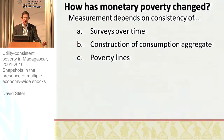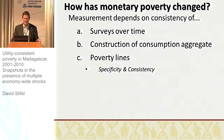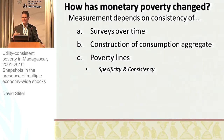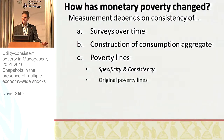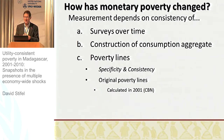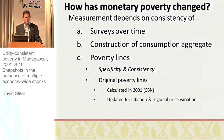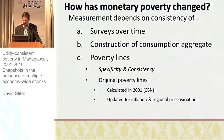On the poverty lines, we get into the question of specificity and consistency. The original poverty lines for Madagascar started with the 2001 poverty line, and each year they've updated them for inflation and regional price variation, as is common practice.